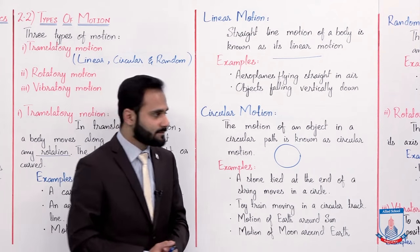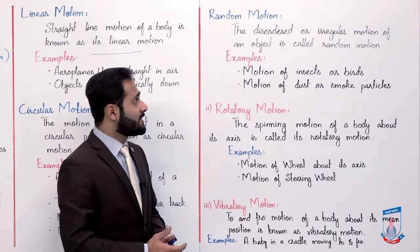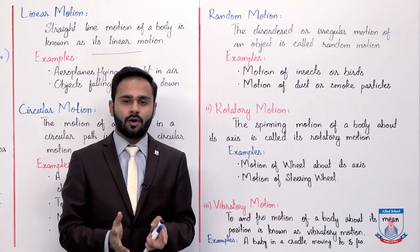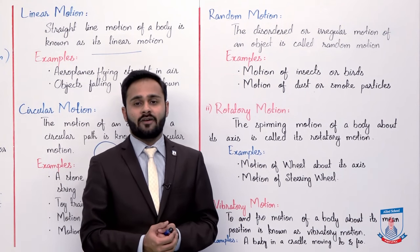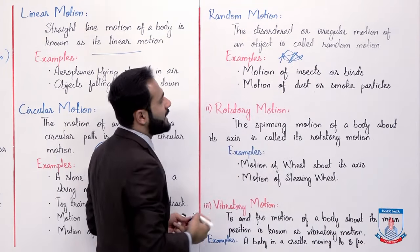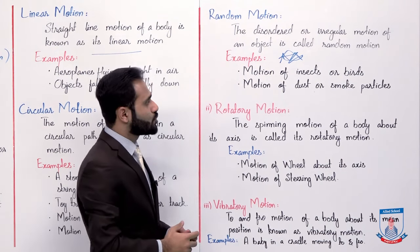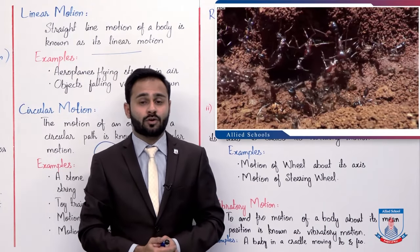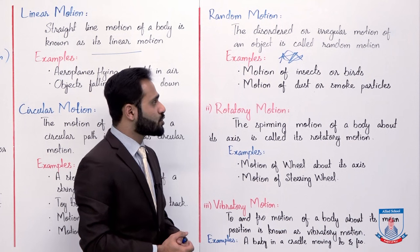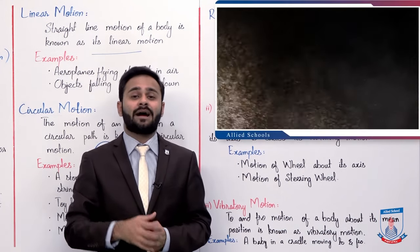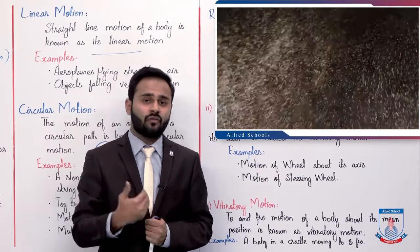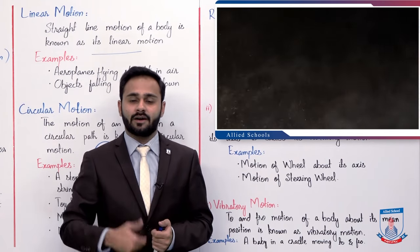Ab discuss karte hain random motion. The disorder or irregular motion of an object is called random motion. Disorder means ke uska koi specific order na ho, woh irregular sa motion ho, toh usse hum kahenge random motion hai. Like motion of insects or birds — aap ko pata hai ke insects or birds jo hain woh randomly move karte hain, toh unka jo motion hai usse hum kahenge random motion. Similarly, the motion of dust or smoke particles — air mein jo dust or smoke particles hote hain, unka bhi random motion hota hai. Woh bhi randomly move karte hain, kisi straight line ko follow nahin karte ya kisi circular path ko follow nahin karte, woh randomly move karte hain.